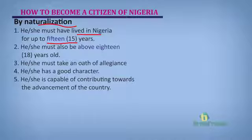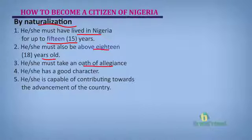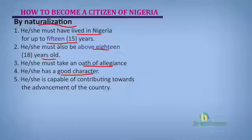The second criteria: he or she must be above 18 years old. The person must be an adult and must have been able to make the decision by him or herself to become a citizen of Nigeria. The third criteria is that he or she must take an oath of allegiance — an oath of loyalty — and this must be taken in court. The fourth criteria is that the person must be of good character. The person shouldn't be an ex-convict or someone who is known to cause disorder in society. Rather, the person must be of good character and of positive reputation.